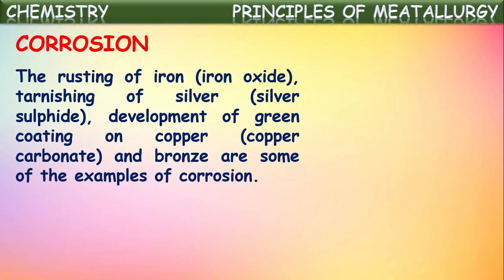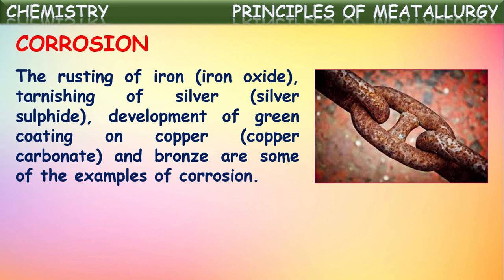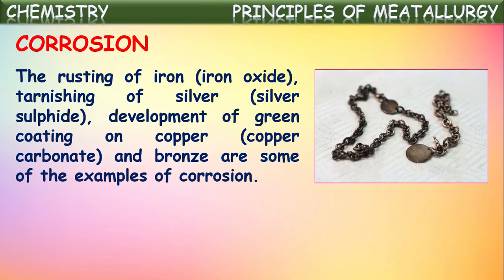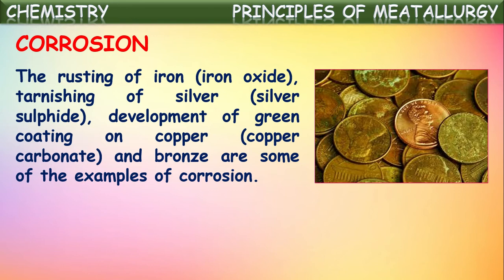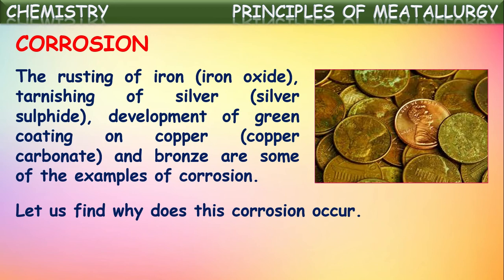Generally the rusting of iron, tarnishing of silver articles, and development of a green coating on copper and bronze are some examples of corrosion. Let's find out why this corrosion occurs — what is the reason for metals getting corrosion on their surfaces.